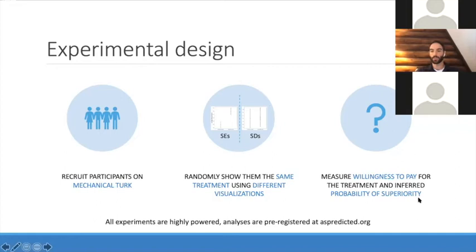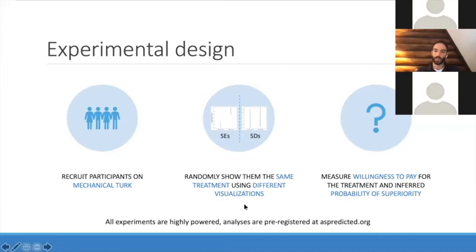We also asked how much they were willing to pay — because there was a $250 fictitious prize — kind of like the sneakers situation. Everything was pre-registered at AsPredicted. That's something we've been doing for a few years now, and the pre-registration process has been great — it's really clarified a lot of our designs and improved our inferences. I'd throw in a plug for AsPredicted or the Open Science Framework or anywhere you can easily pre-register your study designs, not just for experimental work but all kinds of work.